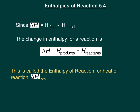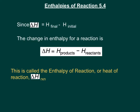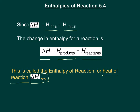Oftentimes when we're talking about changes in enthalpy, or delta H, we're referring to our final minus our initial enthalpy. When talking about changes in enthalpy, we're going to be referring to a reaction or some type of physical process like a phase change. Enthalpy in terms of a reaction is known as the enthalpy of reaction. We take our delta H of reaction, and it's going to be the enthalpy of your products minus the enthalpy of your reactants. This is called the enthalpy of reaction, or sometimes called the heat of reaction.